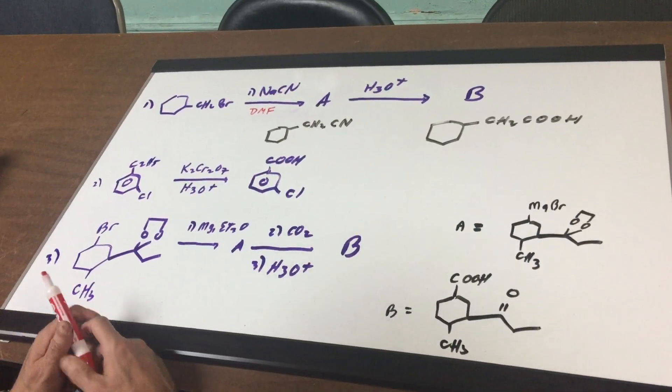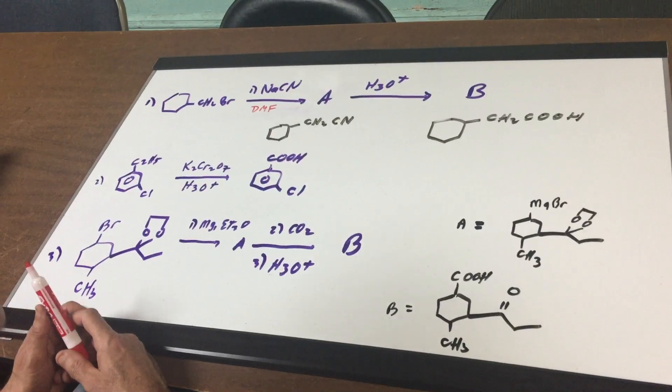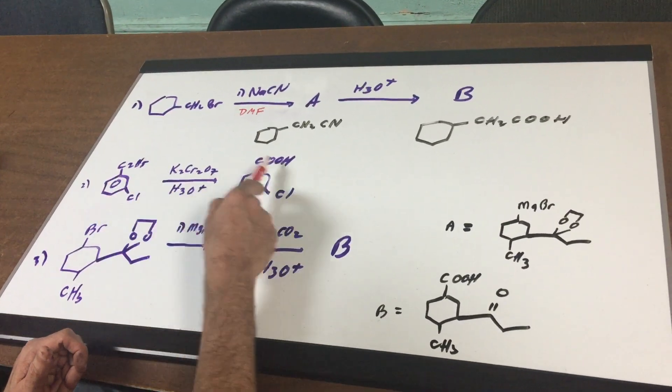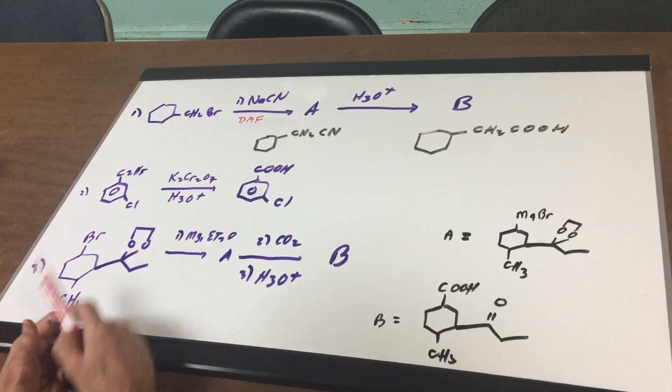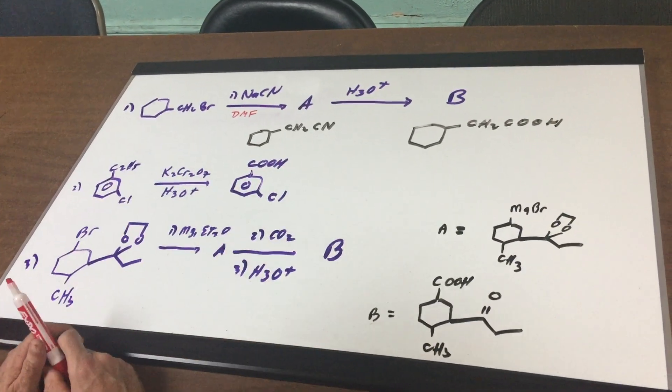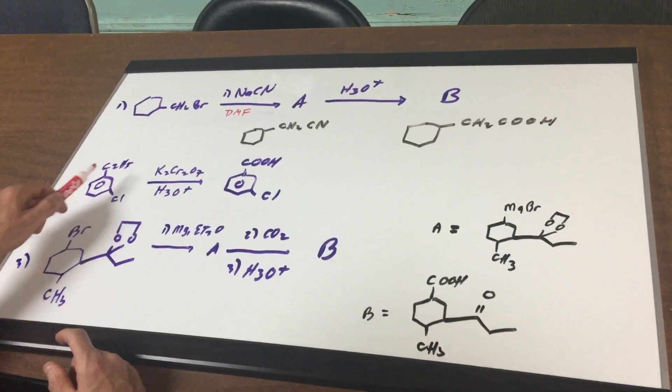Number two, I can do what is known as a side chain oxidation. Anything made of carbon gets burnt off the benzene ring to a carboxylic acid. Anything not made of carbon stays behind. So this is one of my favorite ways to make a benzoic acid.